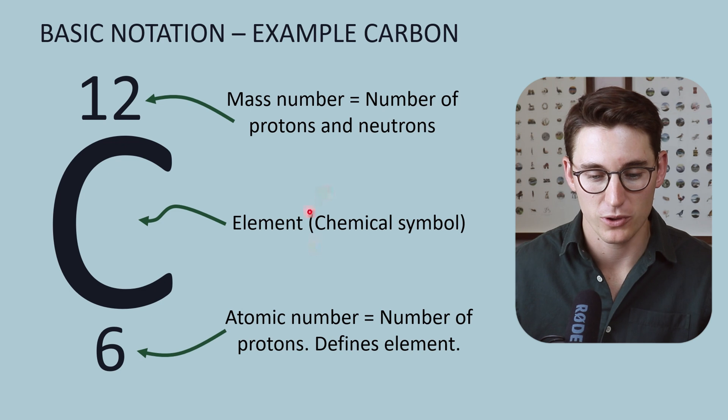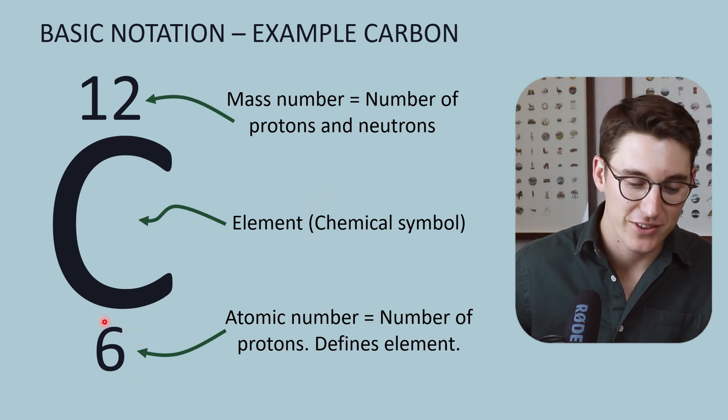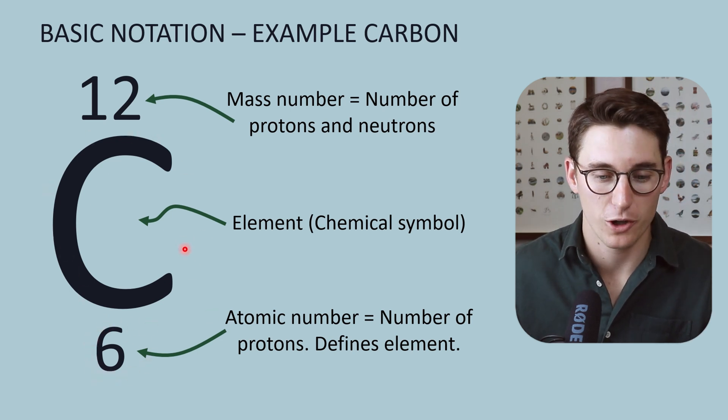We can use carbon as an example. Carbon has six protons. The atomic number of carbon is six. If this atomic number was to change, if this was to go to seven or eight, it would no longer be called carbon.